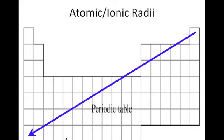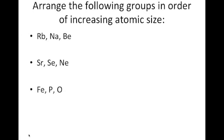This is what a general trend of atomic radius looks like — smallest atoms up by helium, largest atoms down here at francium. Now arrange the following in order of increasing atomic size: rubidium, sodium, and beryllium, all in groups one and two. Beryllium is in period two — like a two-story building. Sodium is in period three — a three-story building. Rubidium is in period five — a five-story building. So the order from smallest to largest is beryllium, sodium, then rubidium.